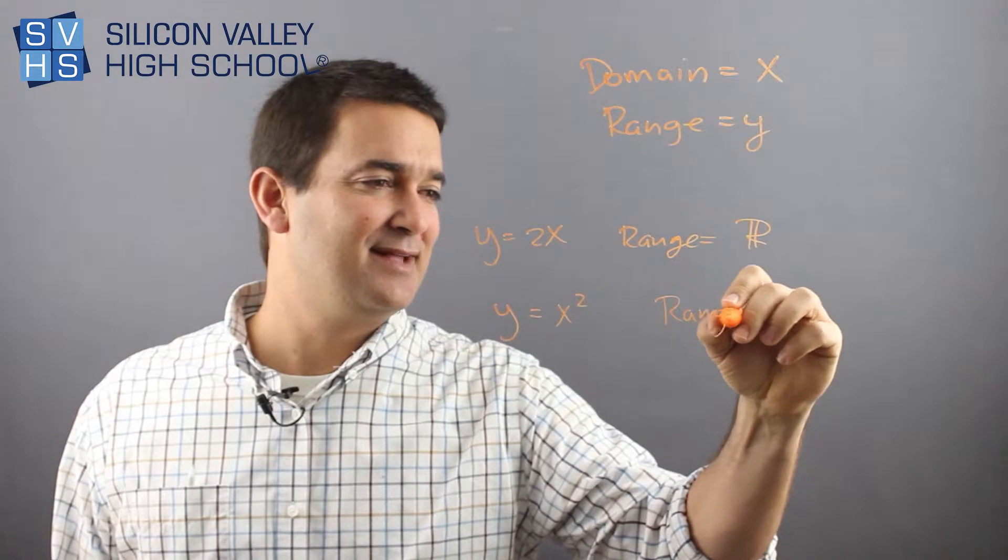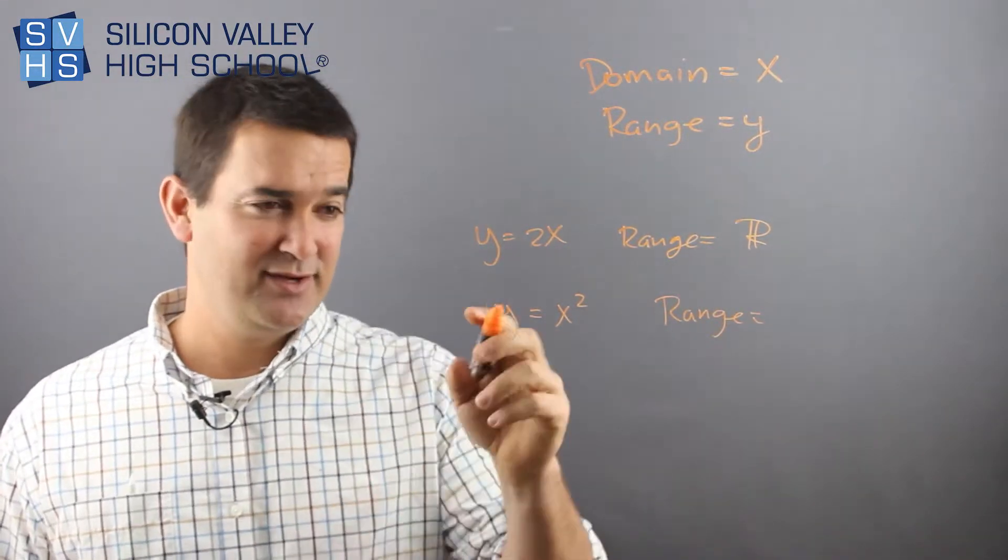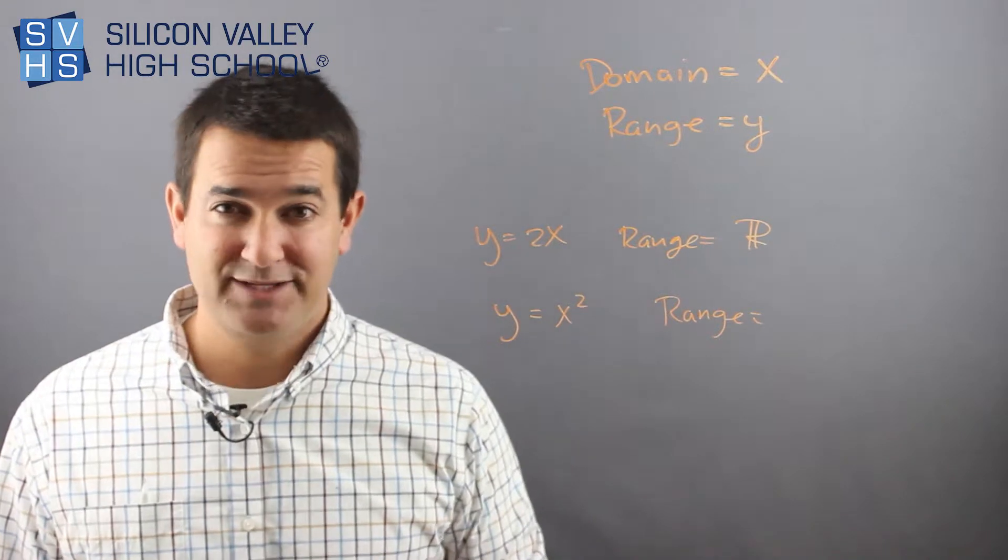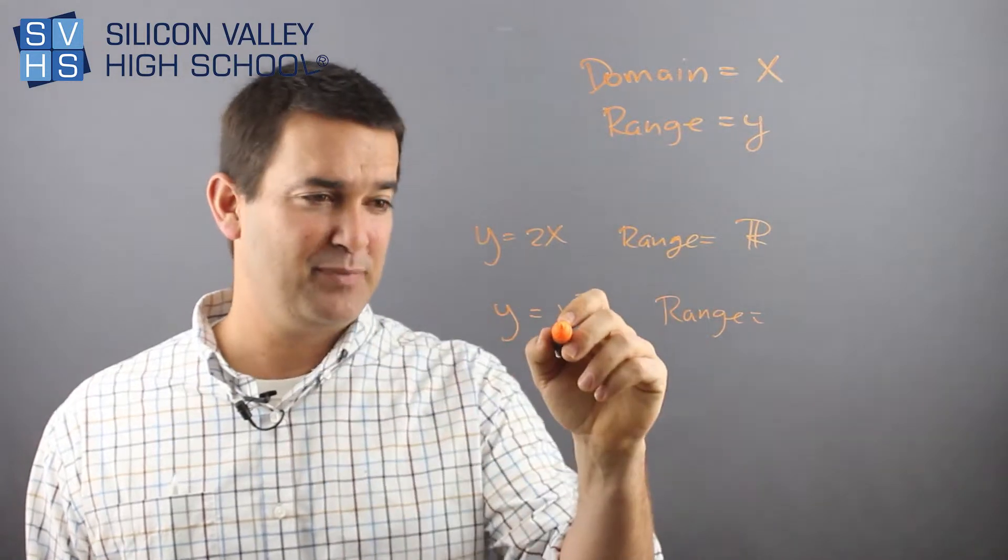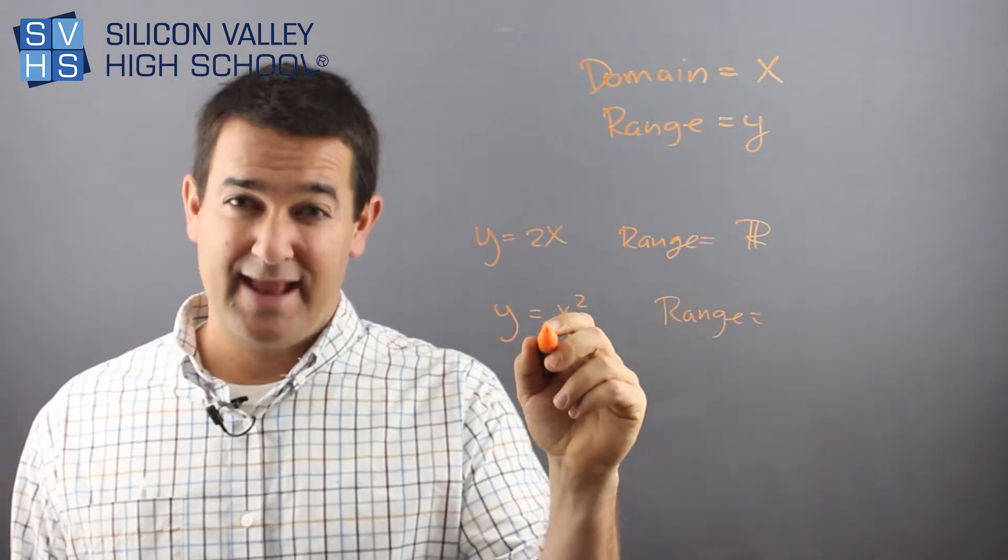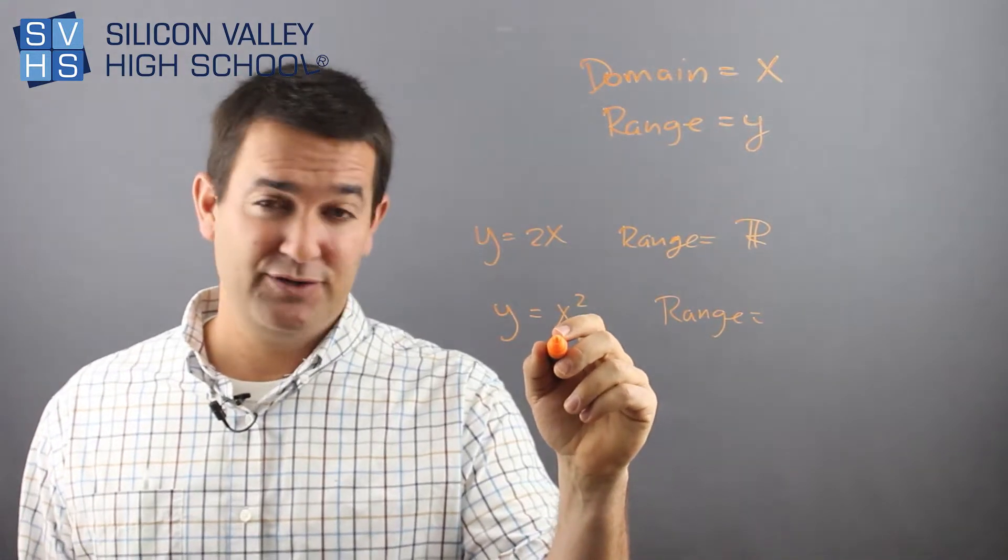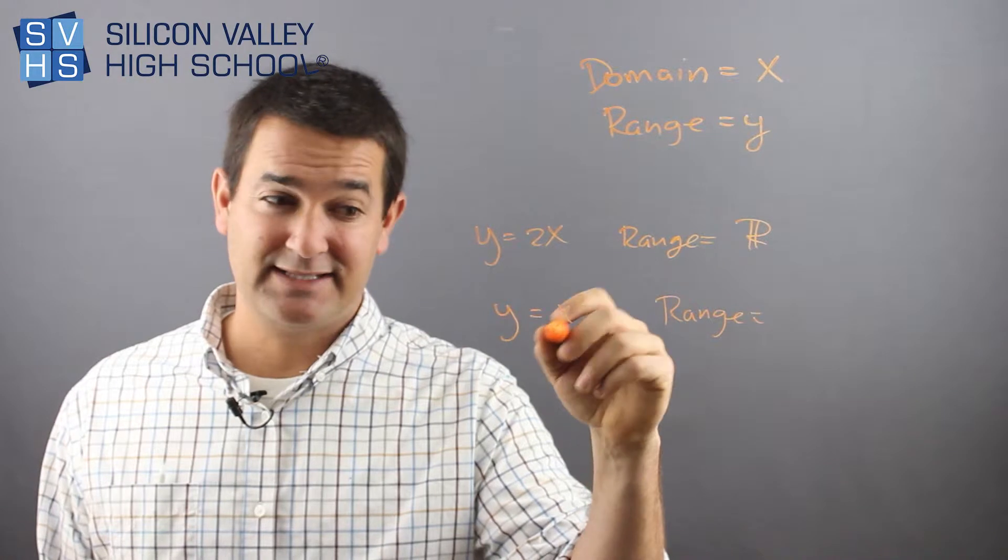But range is kind of crazy. I think a lot of people miss this one right out of the gates. There is no situation where you could get a negative Y. So range can't be negative. Look, as an example, give me any X, like positive. If I put positive two, two squared is four, which is positive. What if I put a negative X in? What if I put negative two for X? What's negative two squared? That's a positive four.